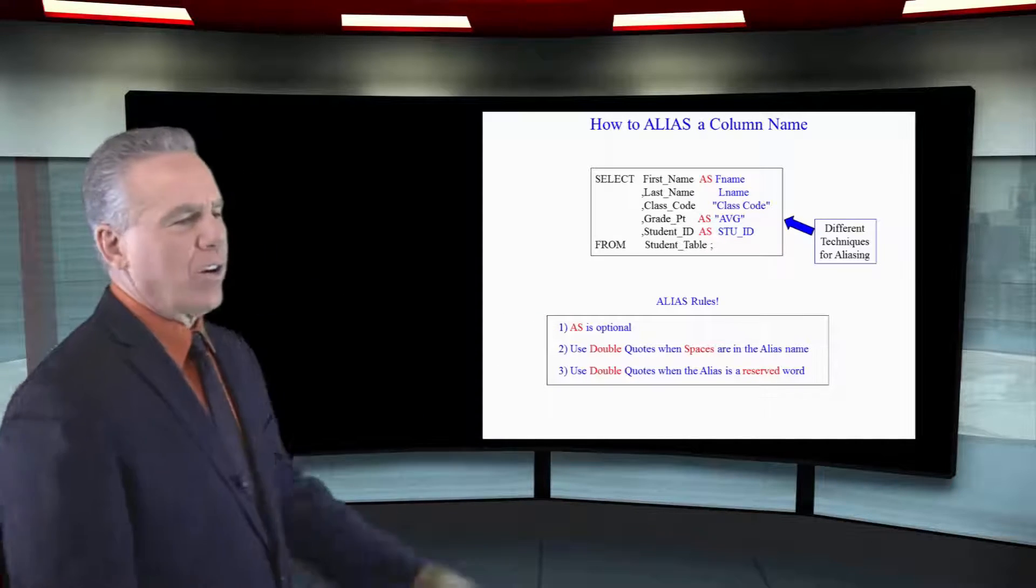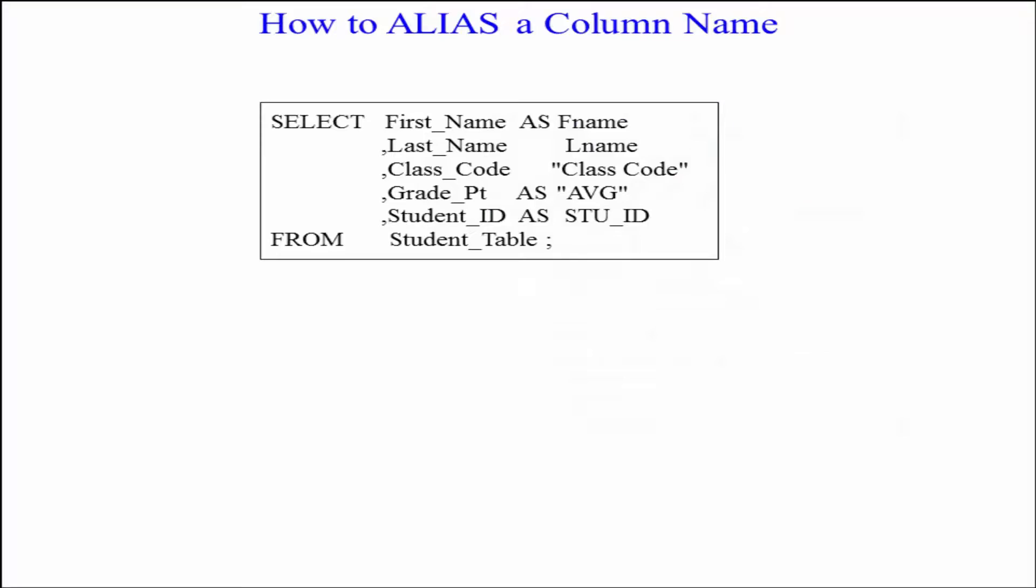As you can see here, we're going to select first name AS F name. F name is going to be on the top of the report header, and all the first names will be there. I could even sort or order by F name at the end.